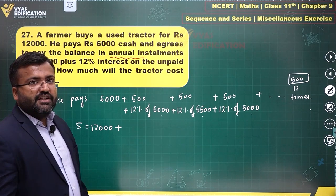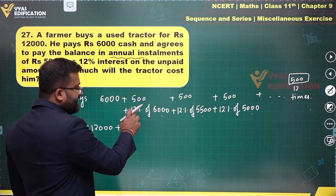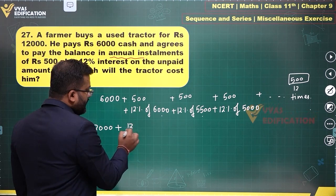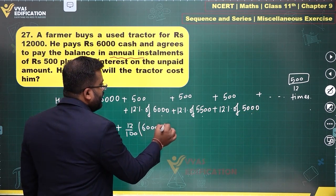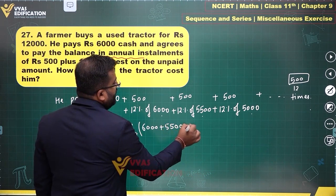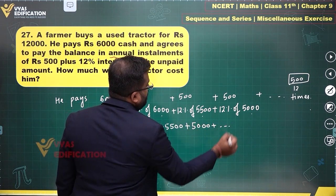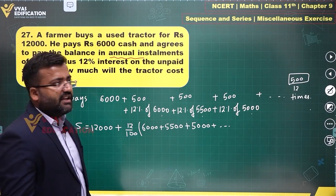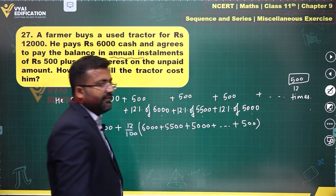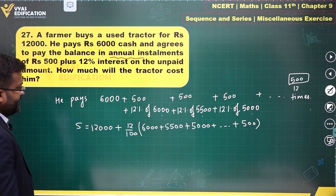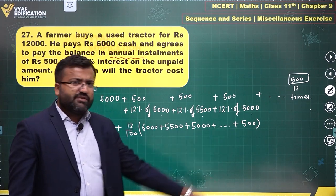The additional series is 12 percent of 6,000, plus 12 percent of 5,500, plus 12 percent of 5,000, and so on — 12 terms in total, with the last term being 12 percent of 500. This is an arithmetic progression, which is straightforward to handle.